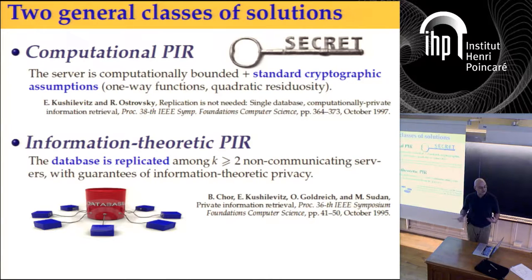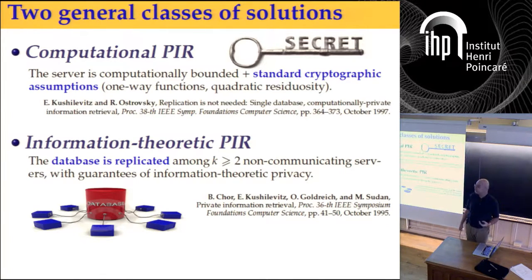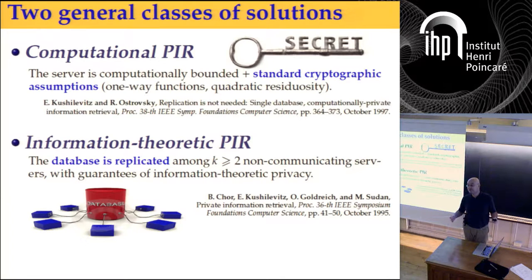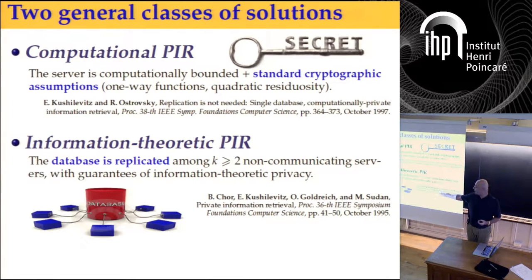In computational PIR, we replace the information-theoretic privacy condition by computational assumptions — certain hard problems. The first one they used was quadratic residuosity; there are also one-way function solutions. The security is based, as in conventional crypto, on hardness of computation. In information-theoretic PIR, which attracted most of the research, we require information-theoretic security as before.